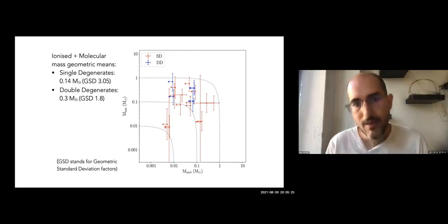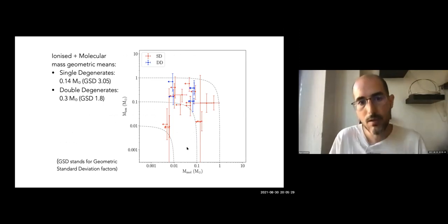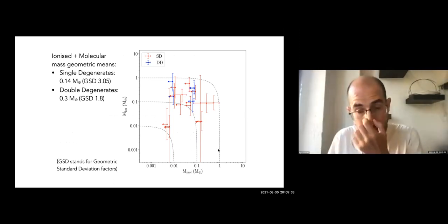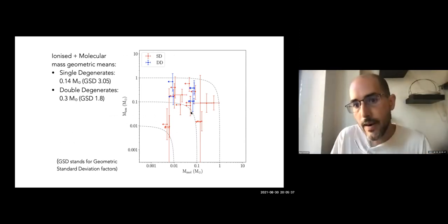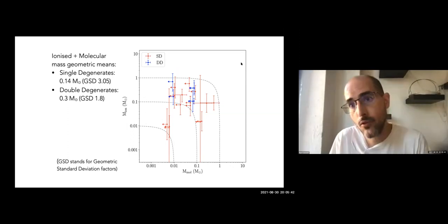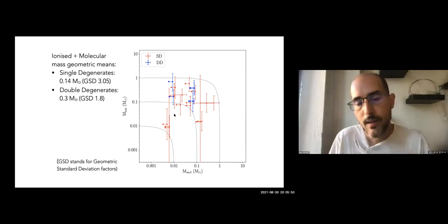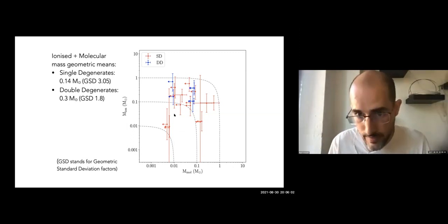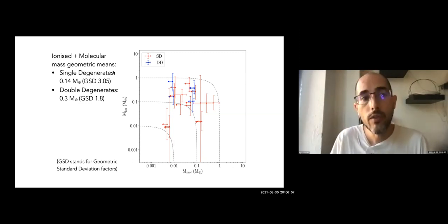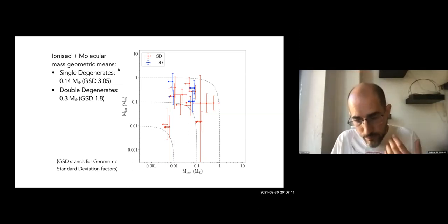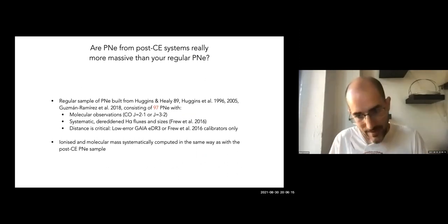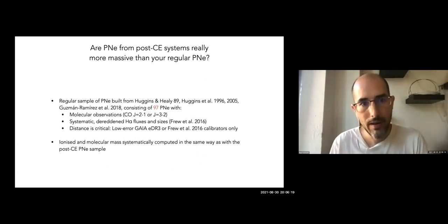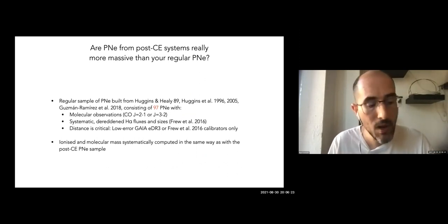We made a plot of ionized mass versus molecular mass, where lines of equal total mass are shown, and nebulae further to the top right are more massive. We can distinguish between nebulae from single degenerate systems — hosting only one white dwarf — and those from double degenerate systems, which seem to be roughly twice as massive according to the geometric means. The question is: are post-CE PNe really more massive than regular PNe? For comparison we built a sample of 97 regular PN with Gaia distances, systematically computed molecular and ionized masses, and plotted results together.